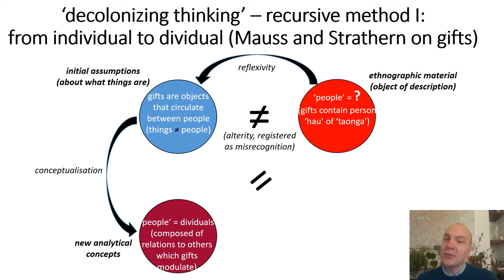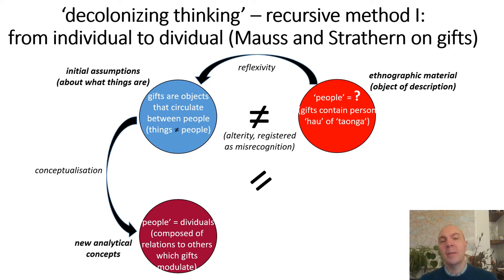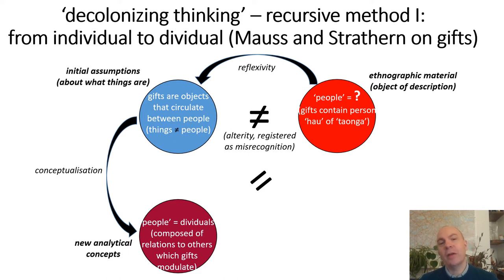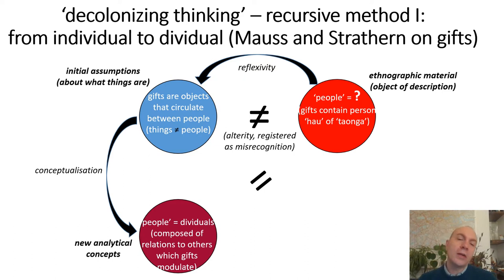Now all that was extremely abstract, so I'm going to use two examples from the PowerPoint. One is from my own work: how I tried to do that kind of conceptual decolonization with a concept of truth, which is so fundamental to the epistemology of all sciences and disciplines, including anthropology. I tried to encounter and engage with ethnographic material relating to the way that diviners operate in Cuba, where I worked — forms of divination originating in West Africa that arrived in Cuba with the Atlantic slave trade.